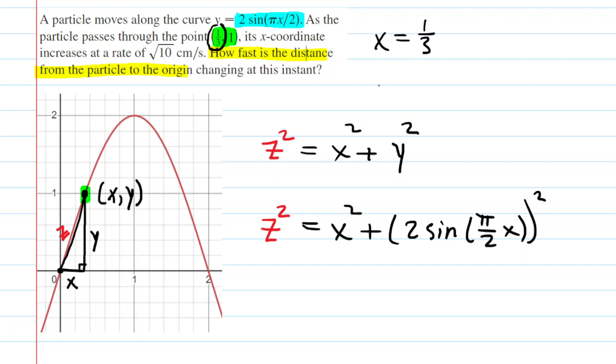That's nice. We also need dx/dt. That was part of our equation down below. But that's given to us. Notice it says that the x coordinate increases—that's a clue that you have a derivative there—at a rate of √10 centimeters per second. So in other words, the rate of change in x with respect to time is √10 centimeters per second.